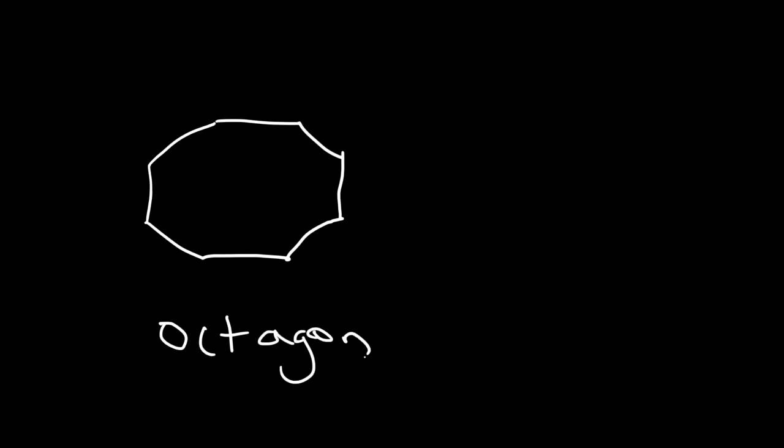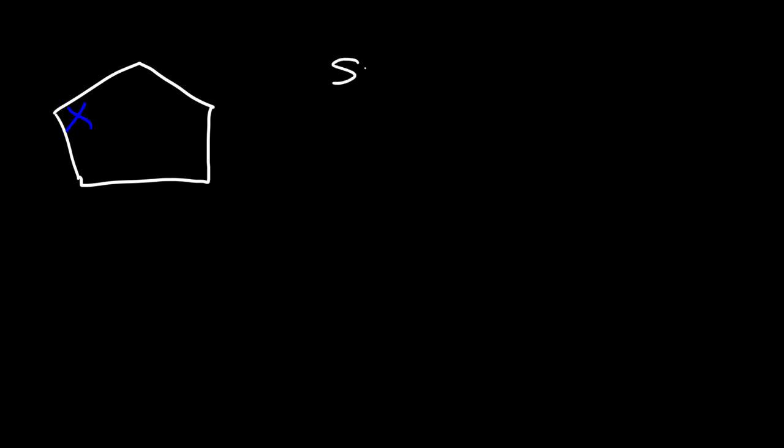So those are some common names that you want to be familiar with. Now, let's say if we have a regular pentagon — what is the measure of an interior angle inside a pentagon? The first thing you need to do is find the sum of all the interior angles in a polygon. You can use this formula: it's n minus 2 times 180, where n represents the number of sides in a polygon.